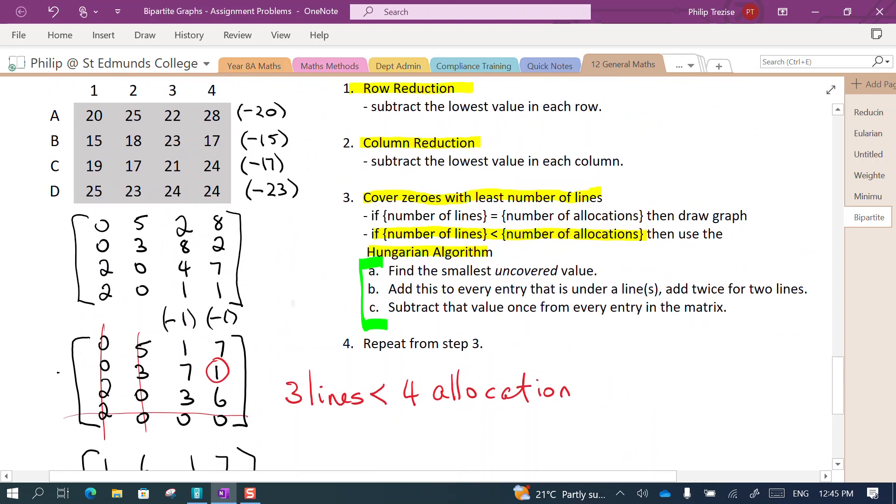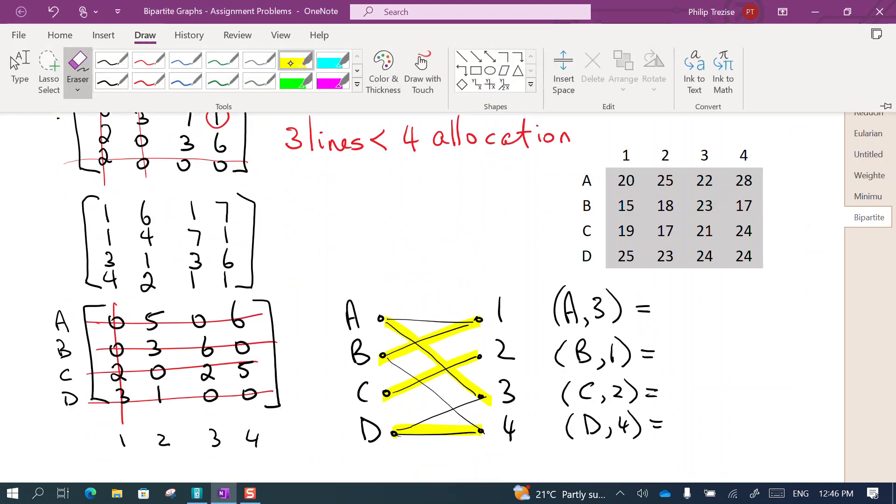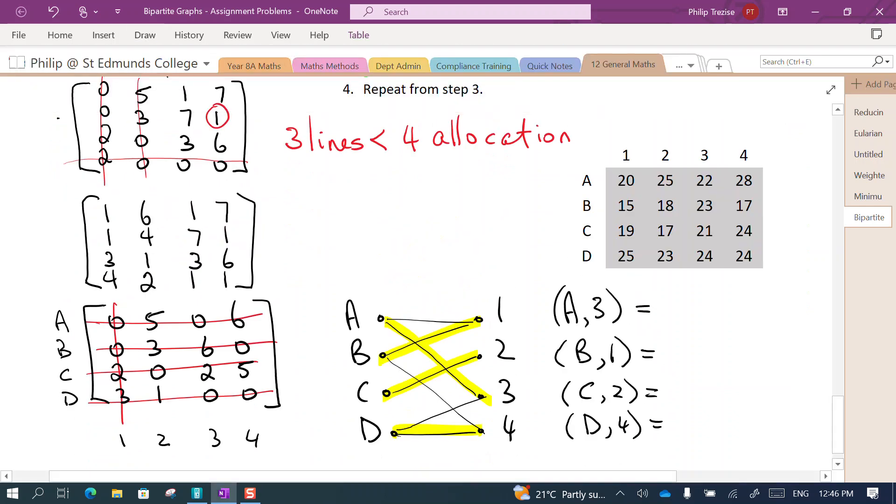The costs from those jobs are all the way back up there. I'll just pause while I go copy them. Okay, so I've just copied my original matrix from the top there. So if A is doing job 3, B is going to do job 1, C will do job 2, and D will do job 4, we can then add up the costs of those. That's a 22, a 15, a 17, and a 24.